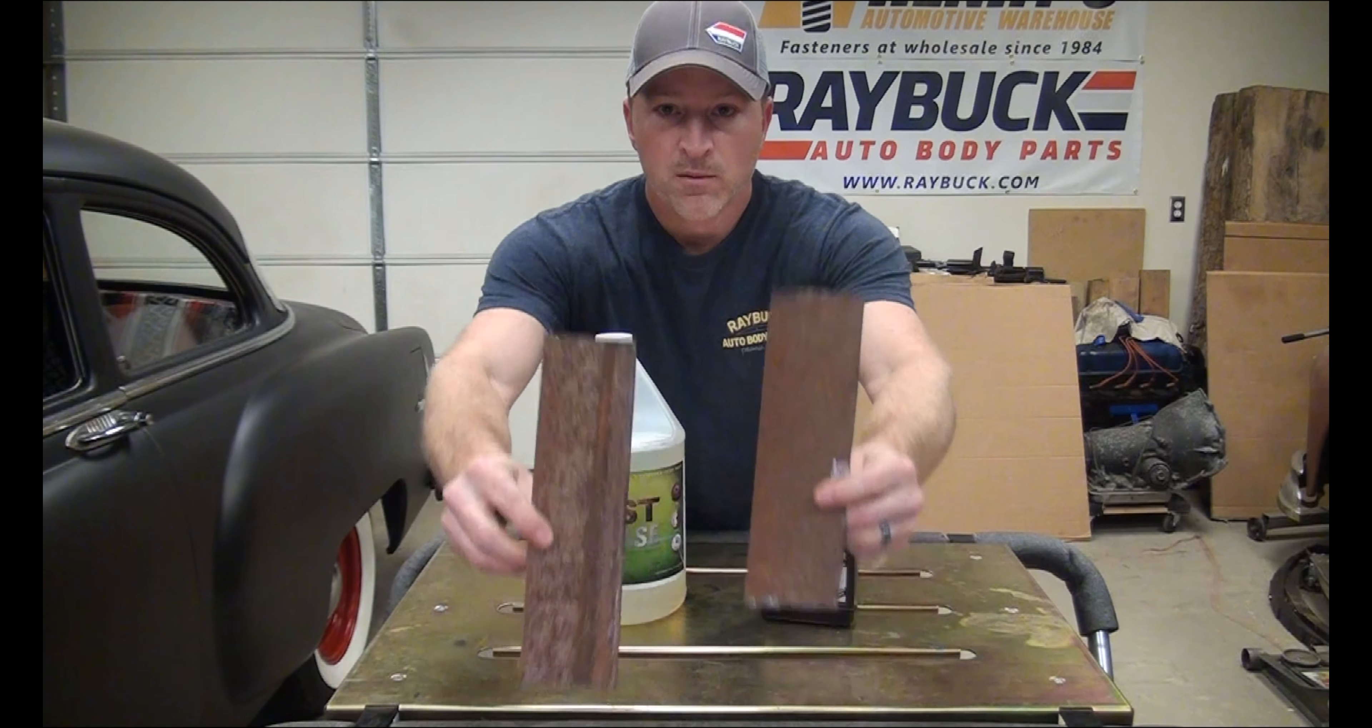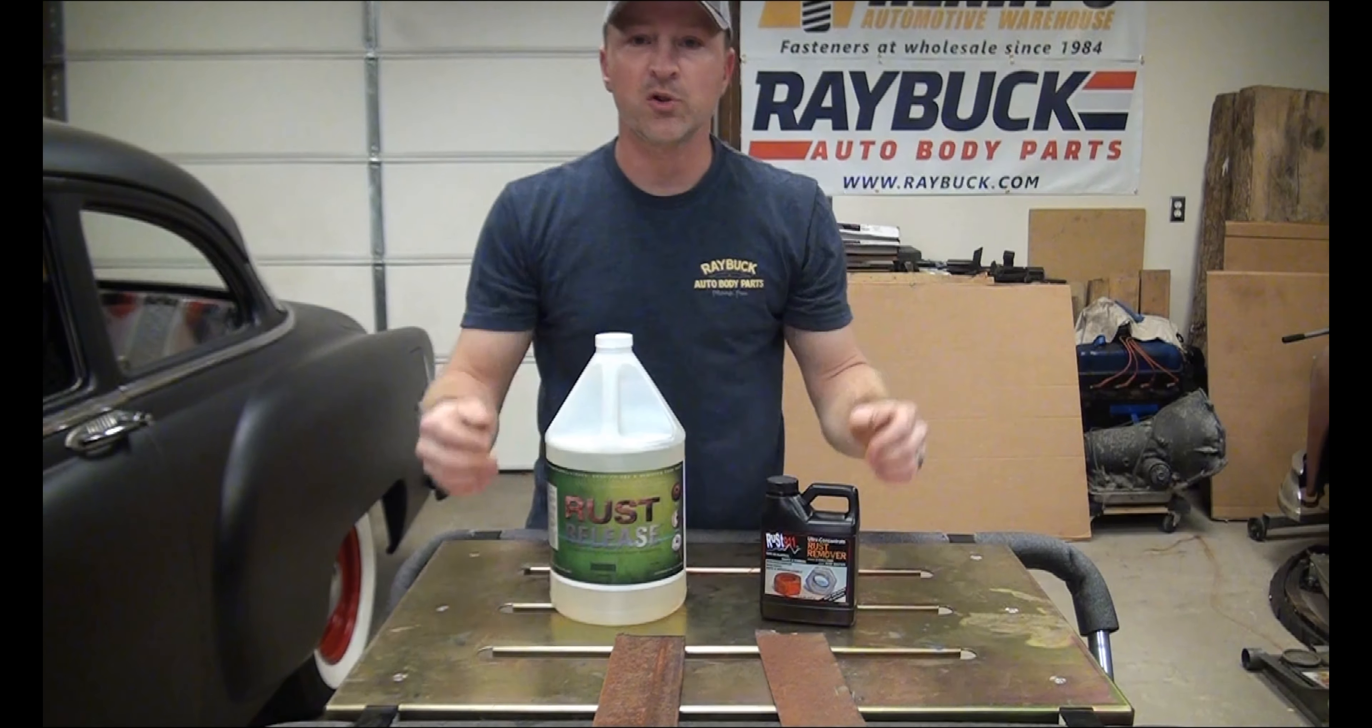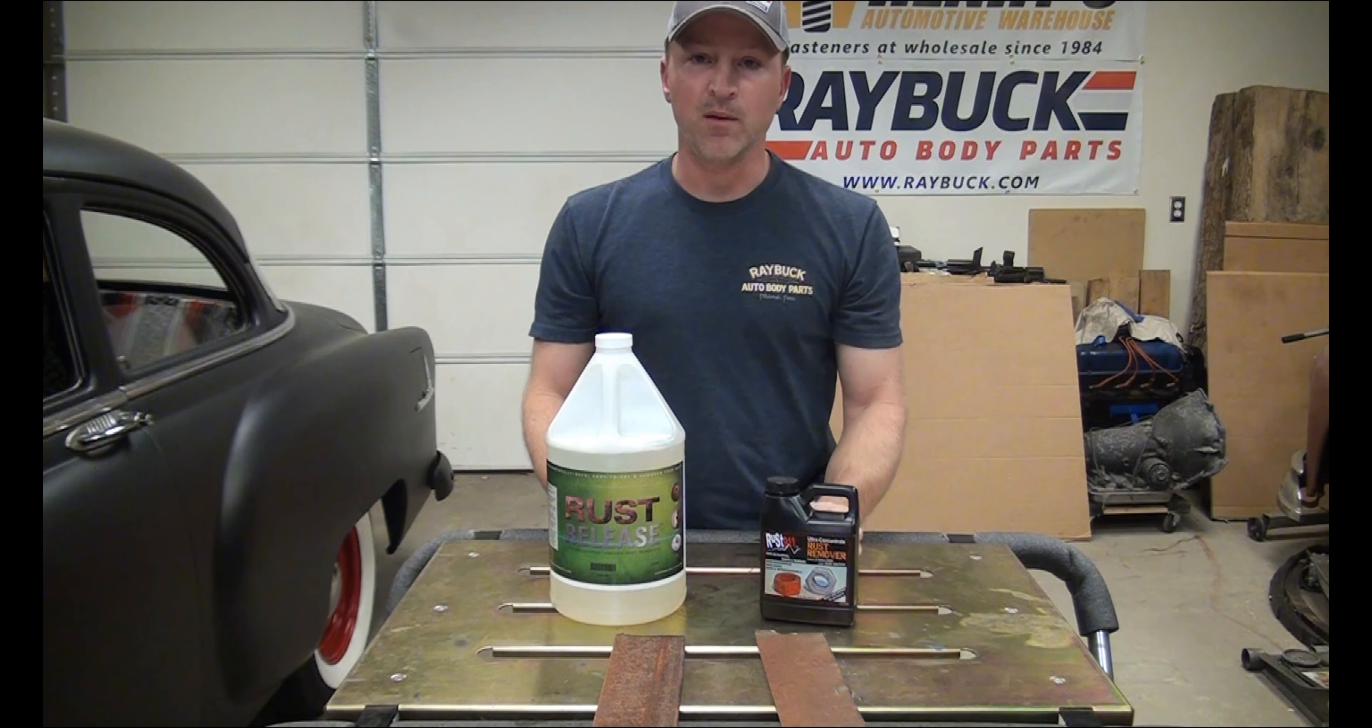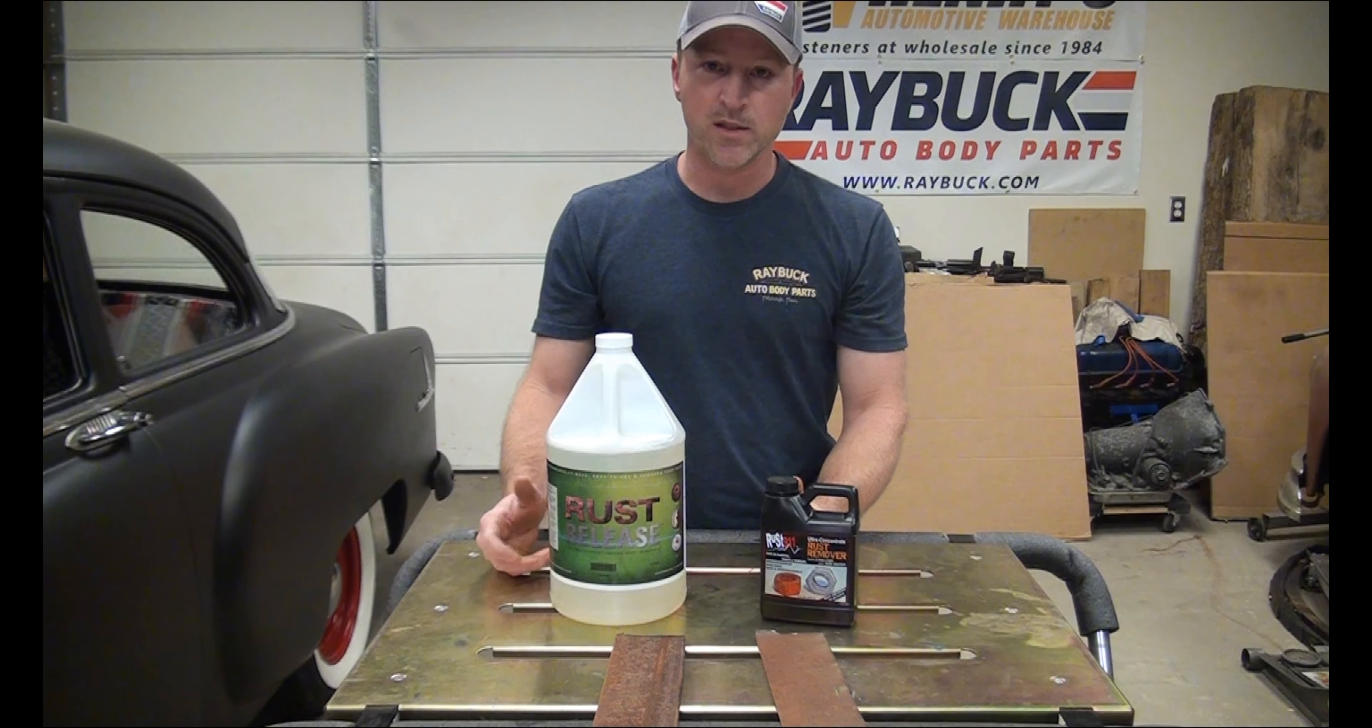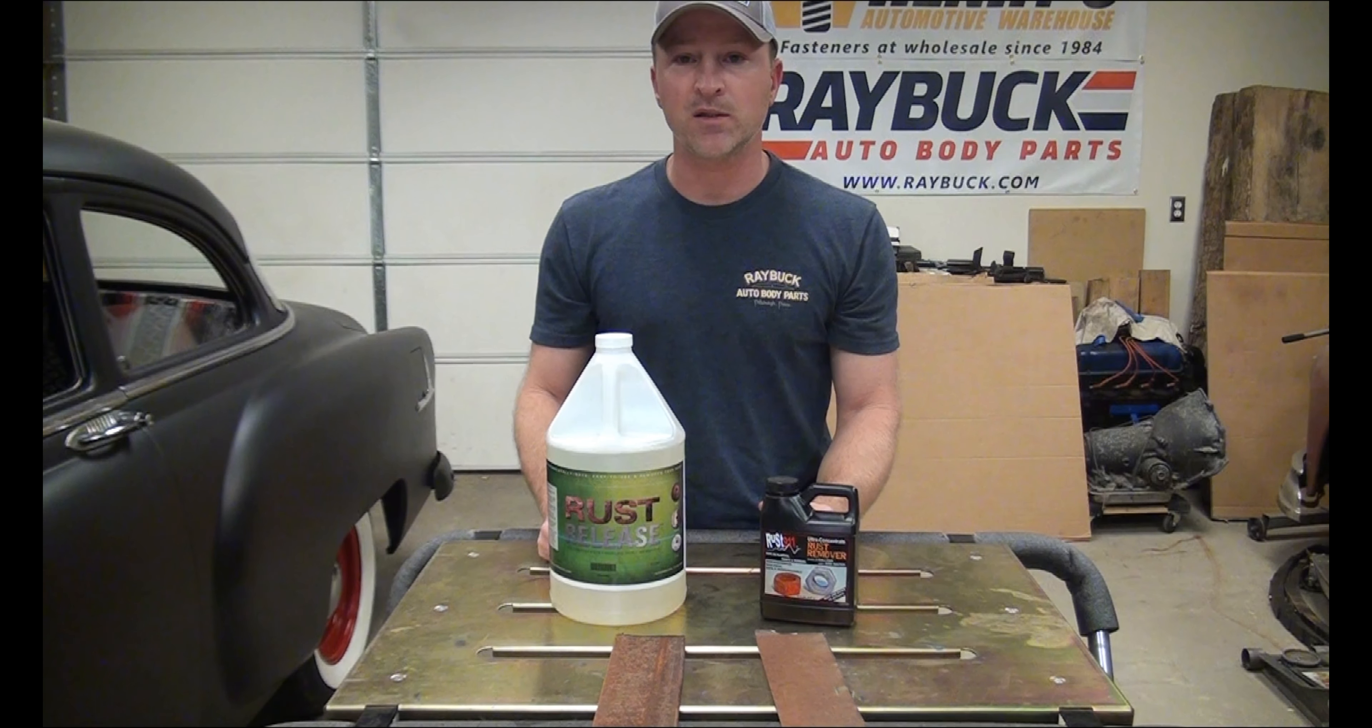Here are the two pieces of metal—just standard rusty metal. They're about the same. We're going to have a solution of each, dip them in, and do a time lapse. Rust 911 says minimum 15 minutes to as long as overnight depending on the amount of rust. Rust Release is similar—I've seen it work in as little as five minutes. But since Rust 911 says 15 minutes, we're going to give it 15 minutes, take them out, and see how the two work.